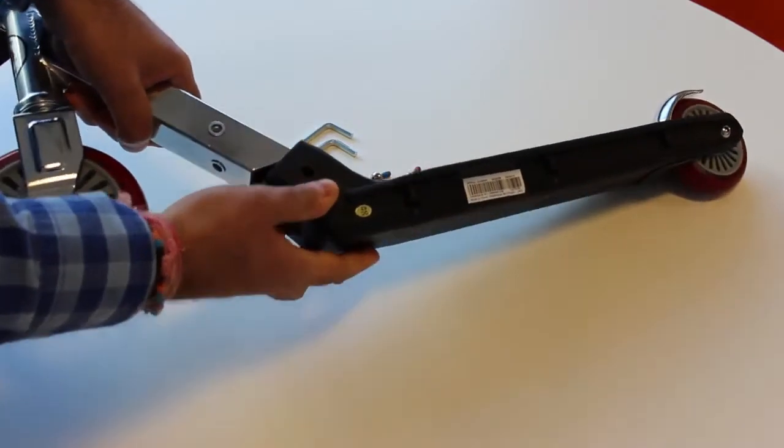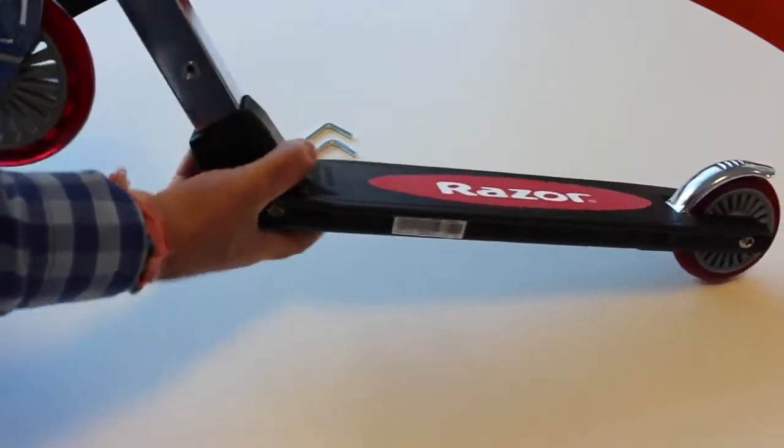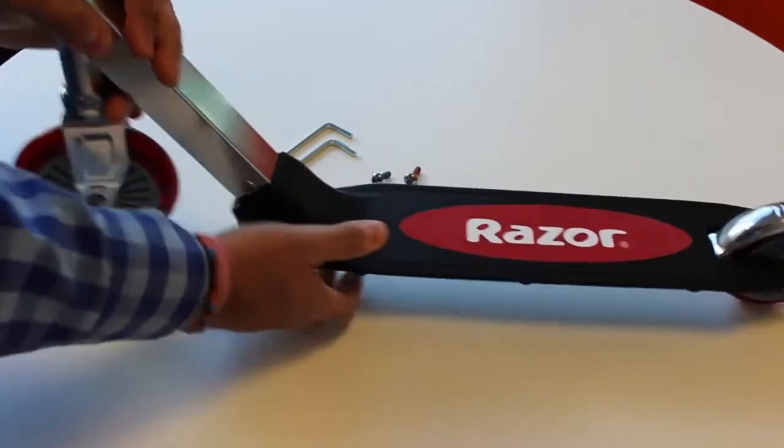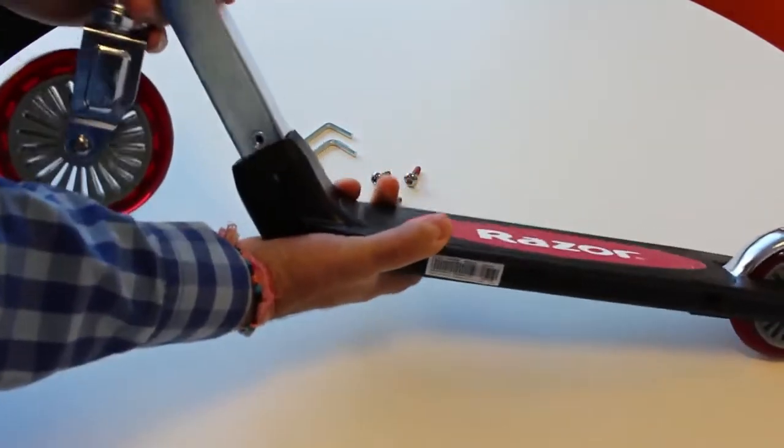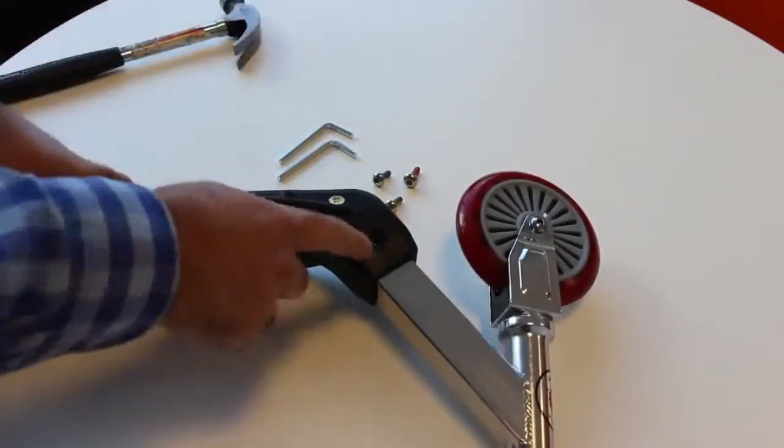The forks slot into the deck in that direction. You can use a hammer to tap the bottom part of the plastic deck there which will just help the holes meet.